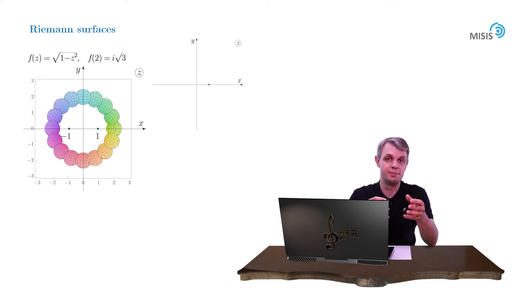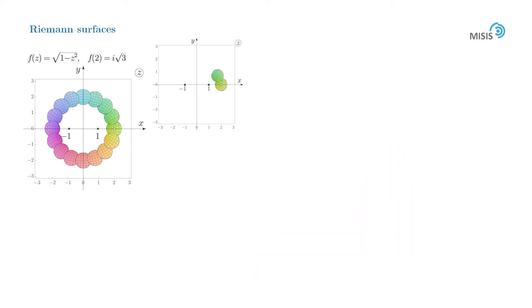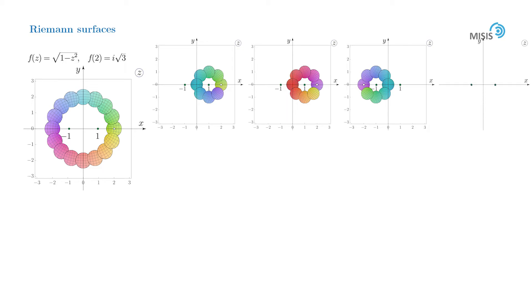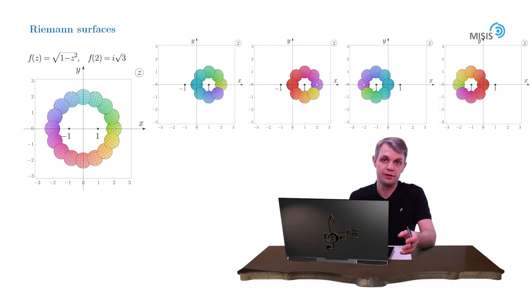Have a look at disk chains presented at left and right figure on your screen. In the left figure, function comes back to its original value after just a single rotation in the complex plane, while on the right figure two windings are needed for the function to restore its value.